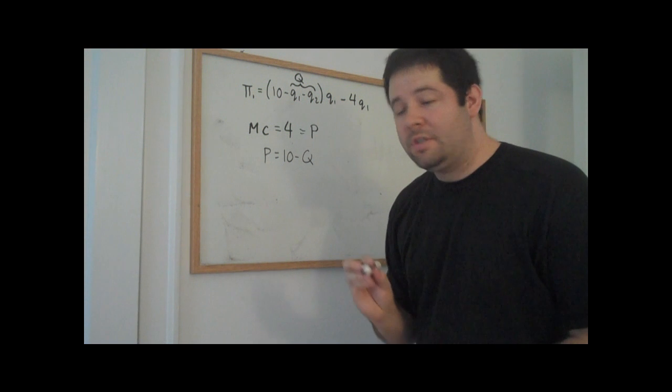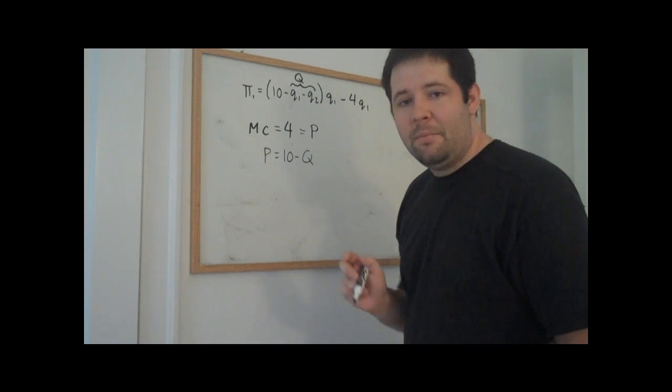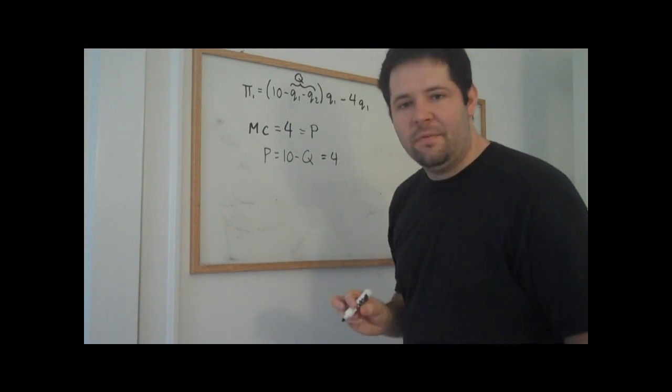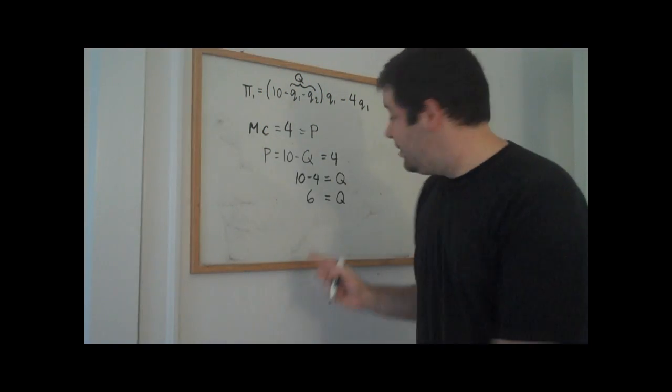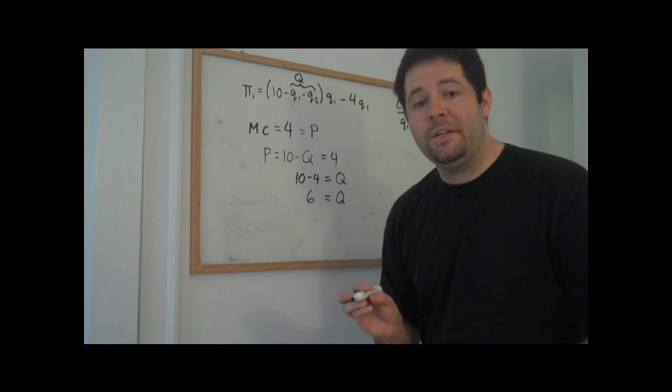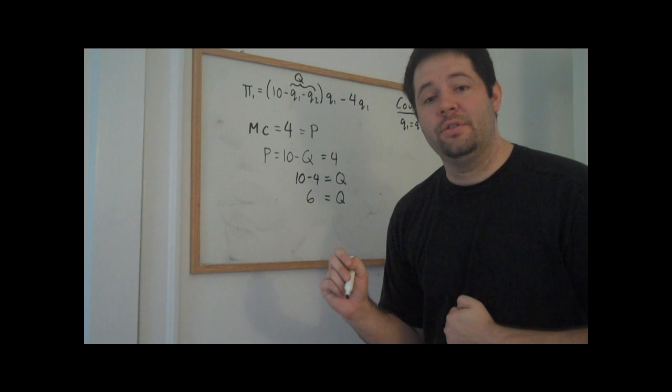Recall that the inverse demand curve is ten minus Q. Set that price equal to four and solve for Q. And so what we see is that there's a total quantity of six for this industry, and so perfect competition means that each firm produces three.